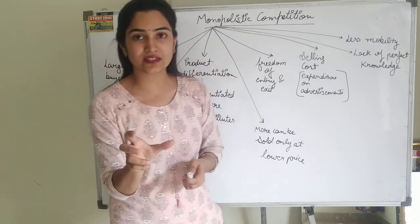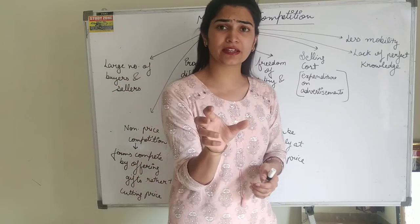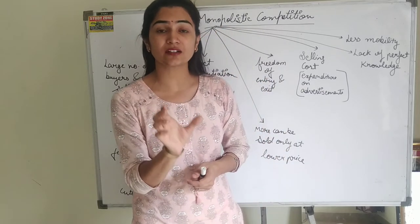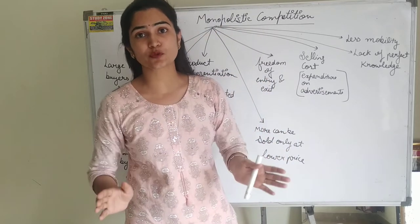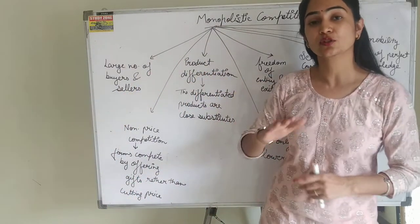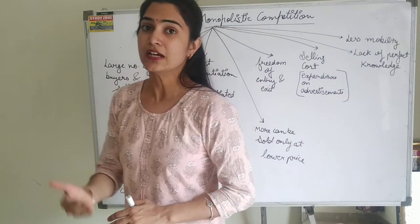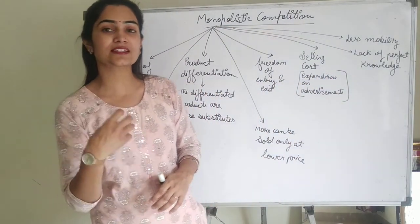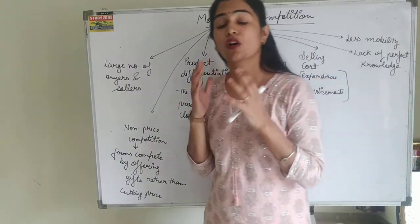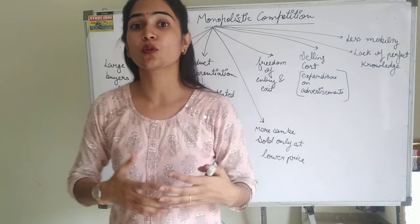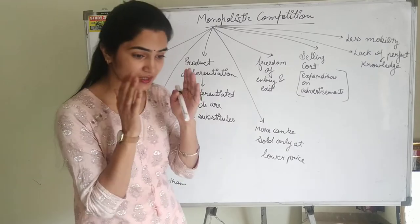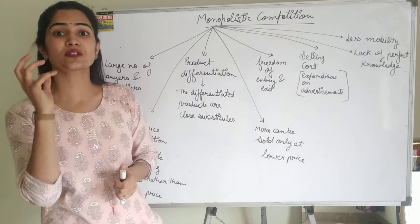For example, soap is a product, but we have hundreds of soap varieties in the market — Lux is there, Synthol is there, Lifo is there. All these products have a certain differentiation; they have their own unique selling point (USP) which attracts customers. They advertise and try to build up their own customer base. The product line is the same but each product is differentiated to sell.